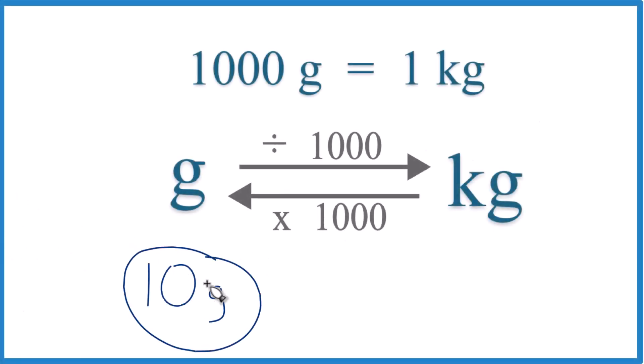Let's convert 10 grams to kilograms. Here's how you do it. First you need to know that a thousand grams equals one kilogram. That's our conversion factor, something you need to remember.